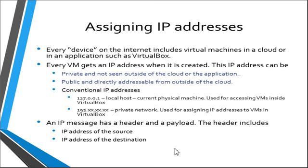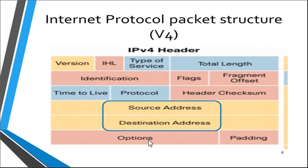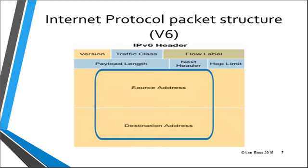There are some addresses used by convention. 127.0.0.1 is your physical machine — also called localhost. 192.0 is the prefix for a private network, and every virtual machine host gets its own set of 192 numbers that it can assign as it wants. This is one way that IPv4 has been extended. Every IP message has a header and a payload, and the header includes the address of the source and the destination — this is true in both IPv4 and IPv6.